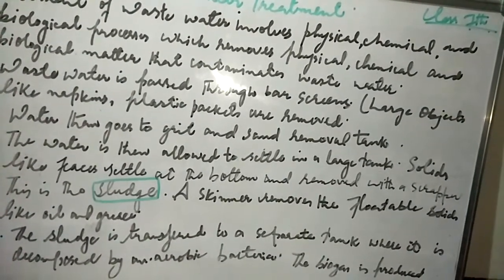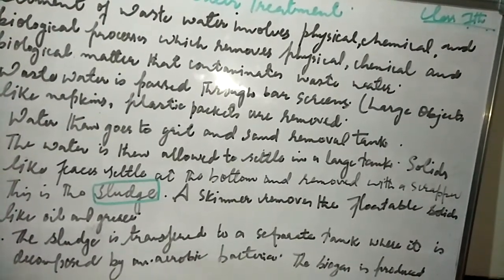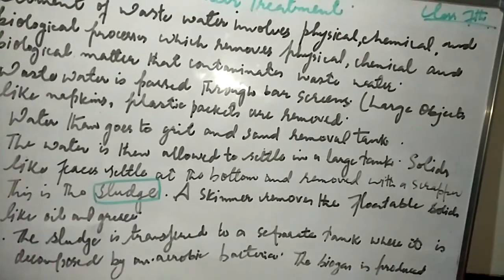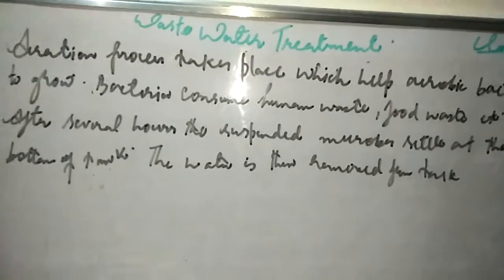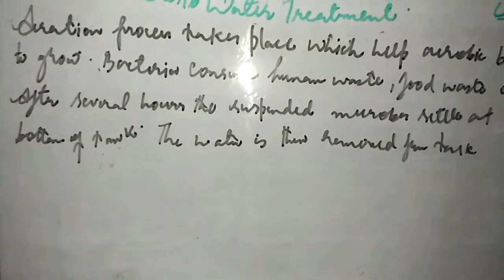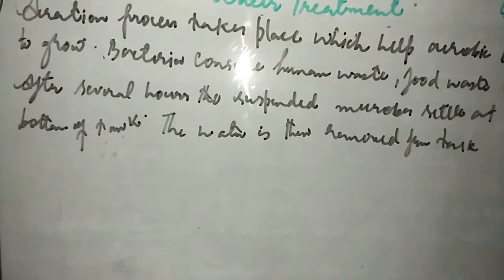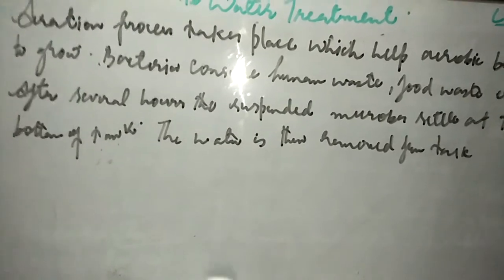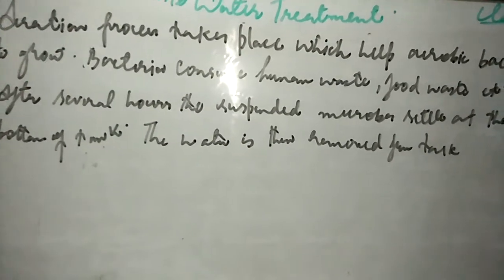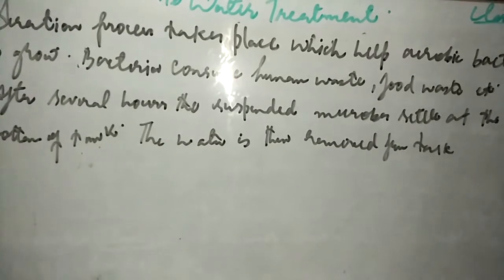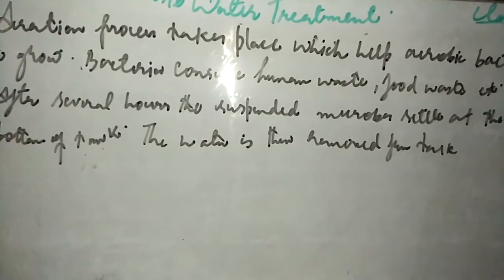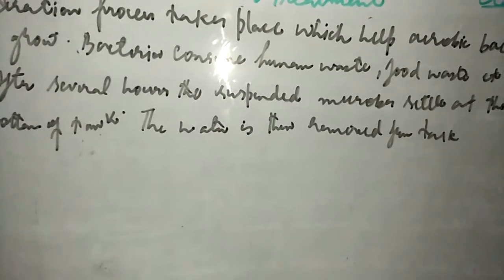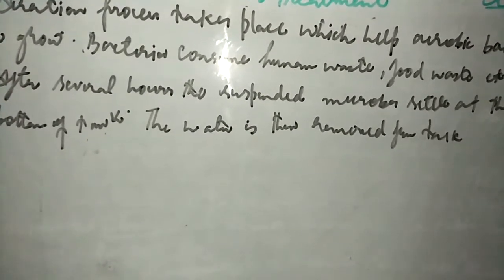The biogas produced from anaerobic decomposition is used as fuel to produce electricity. Then the aeration process happens — air is pumped into the water. This promotes the growth of aerobic bacteria, unlike the anaerobic bacteria used in the previous sludge decomposition step.